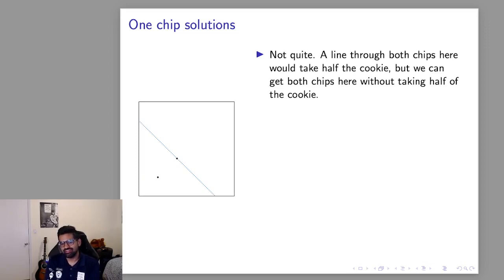So here we have two chips and the line passing between them would cross the main diagonal and give you half the area of the cookie. However if you take this line you get less than half the cookie but still have both chips so this is clearly better than the line passing through both chips.